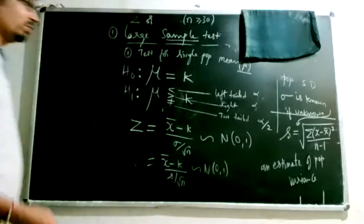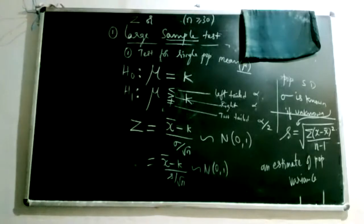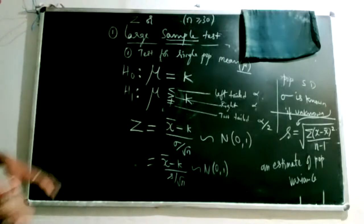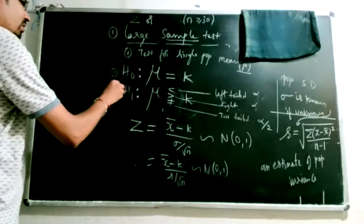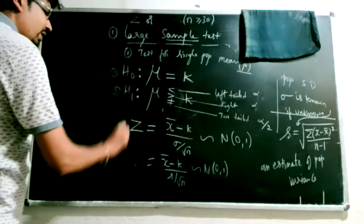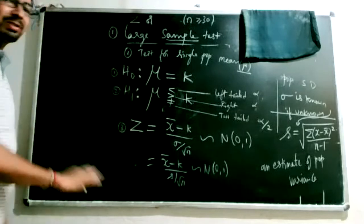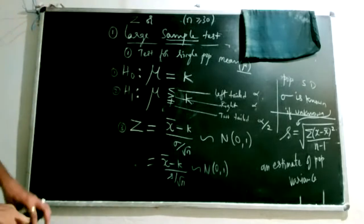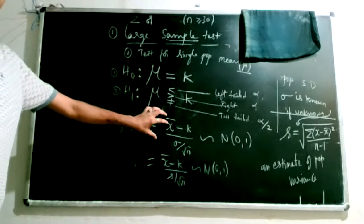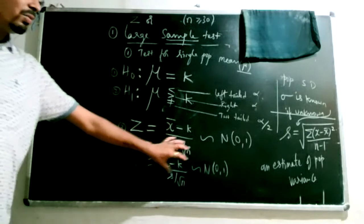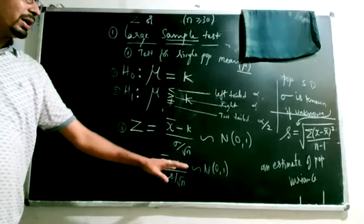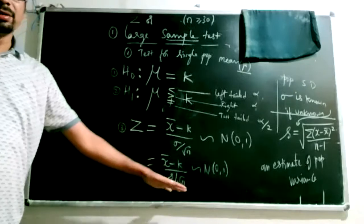If sigma is unknown, you can still use S and proceed with the test. The procedure steps of hypothesis testing are common across all tests — what differs is the hypothesis statement, the test statistic, and the distribution it follows. Evaluation and conclusion steps are the same for almost all hypothesis testing cases.